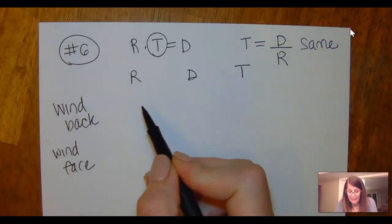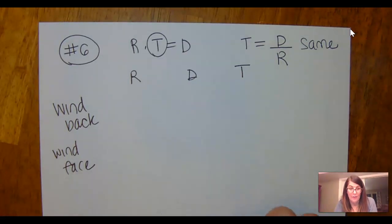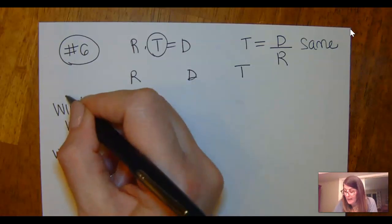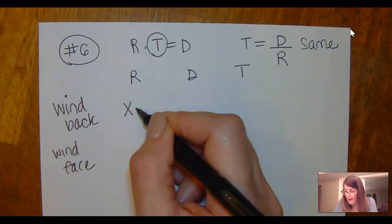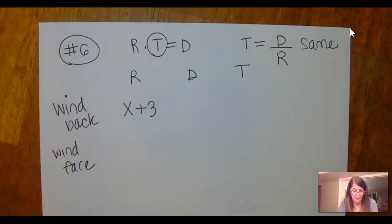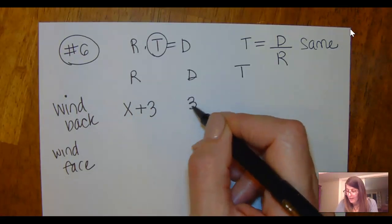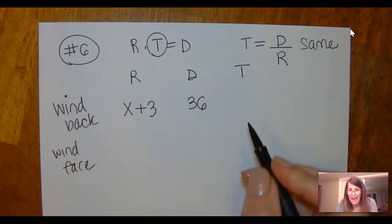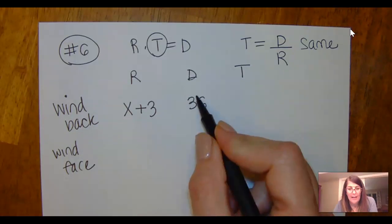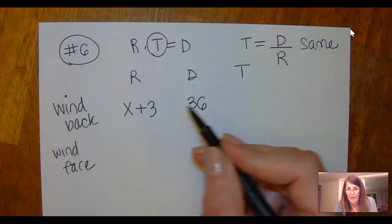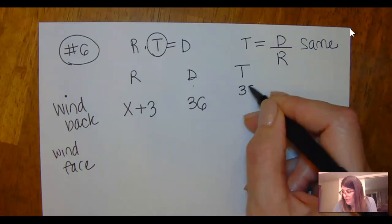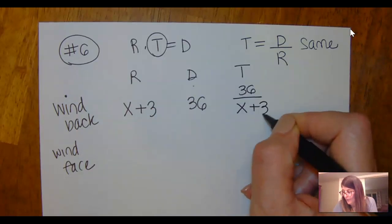When the wind is at his back, it's making him go faster. So if his speed is x, his rate with it at his back is x plus 3. The distance he can travel is 36 kilometers, and the expression for the time is the distance divided by the rate, so it's 36 divided by x plus 3.